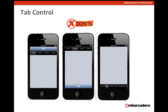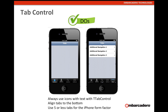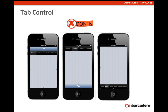For tab control don'ts: having the tab control aligned to the top is not an iOS standard. Having the title at the bottom with the tab control at the top is also incorrect. Having too many tab items on the bottom is another mistake. As a general rule, you should always use icons with text on tab controls, tabs should always be aligned to the bottom, and you should use five or fewer tabs for the iPhone form factor.